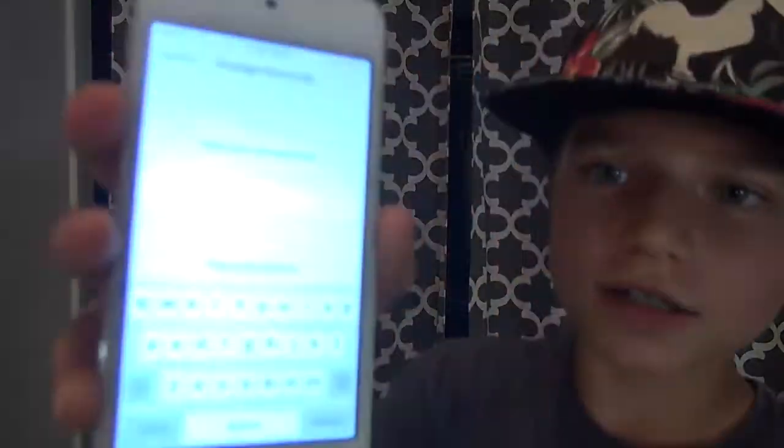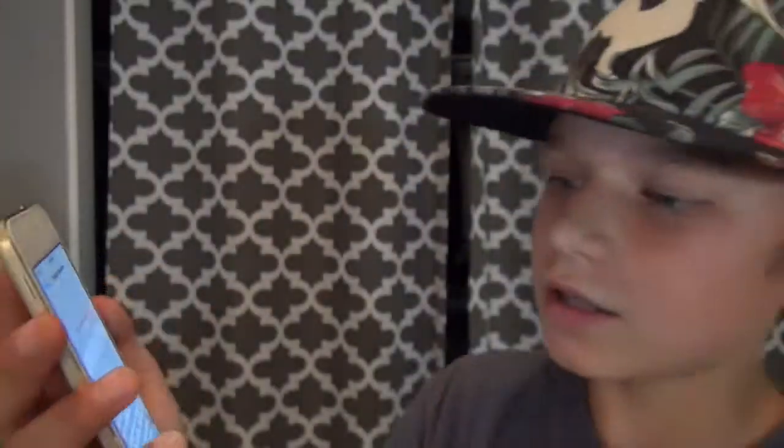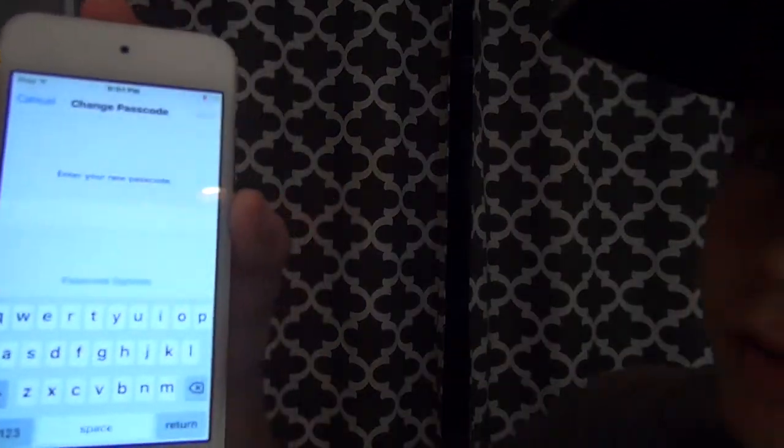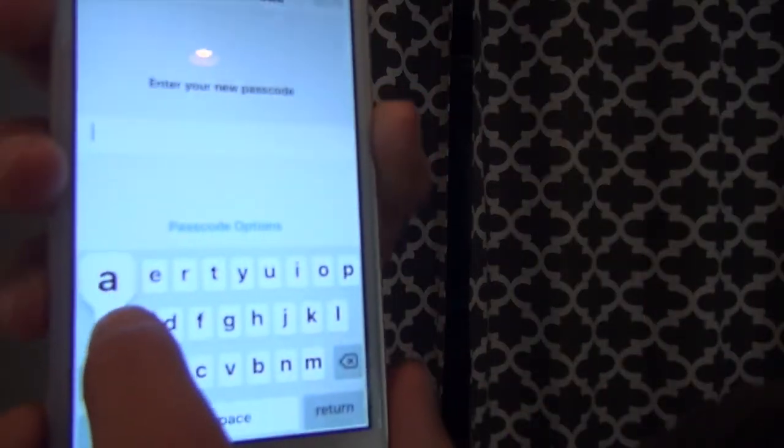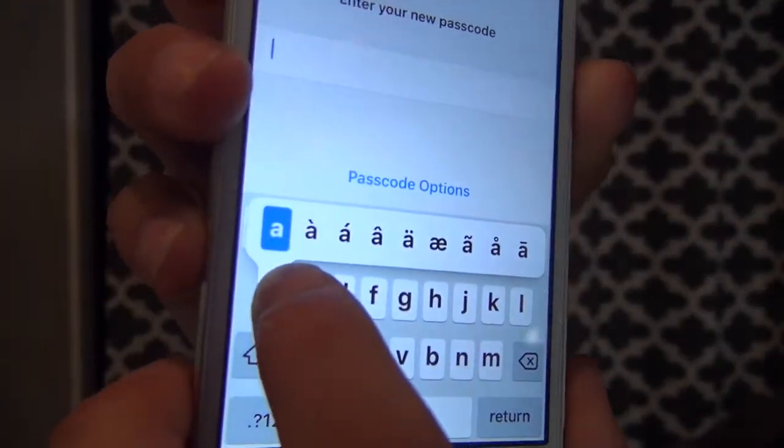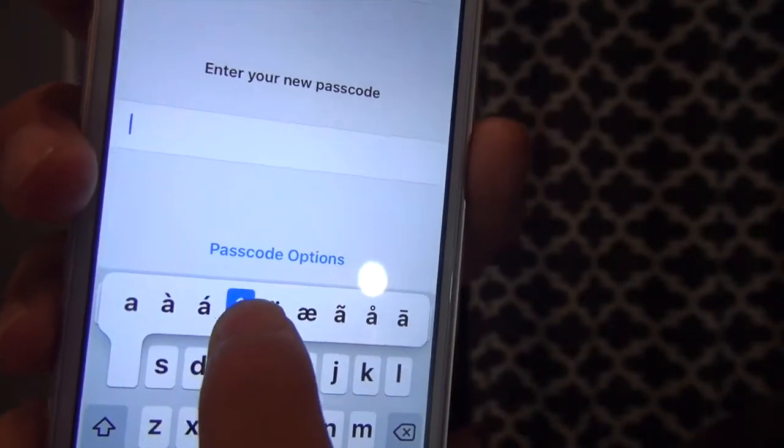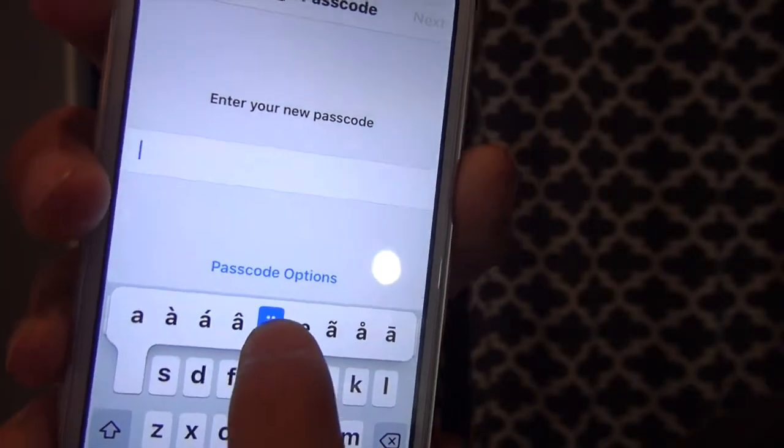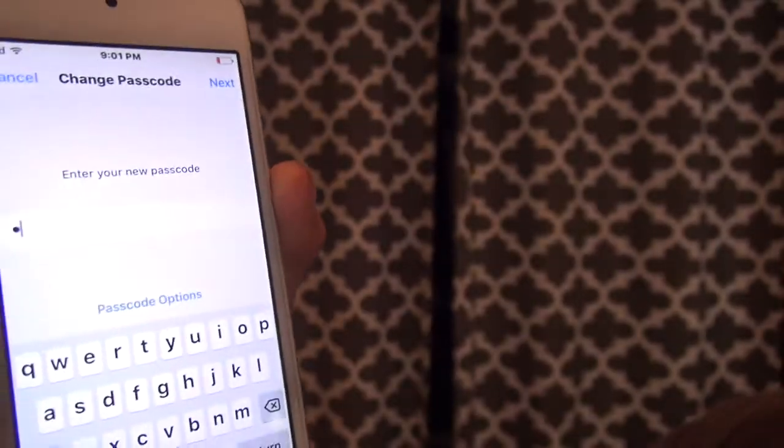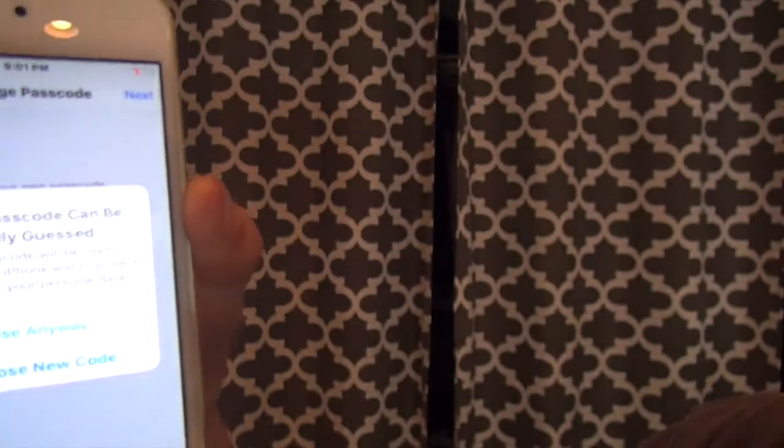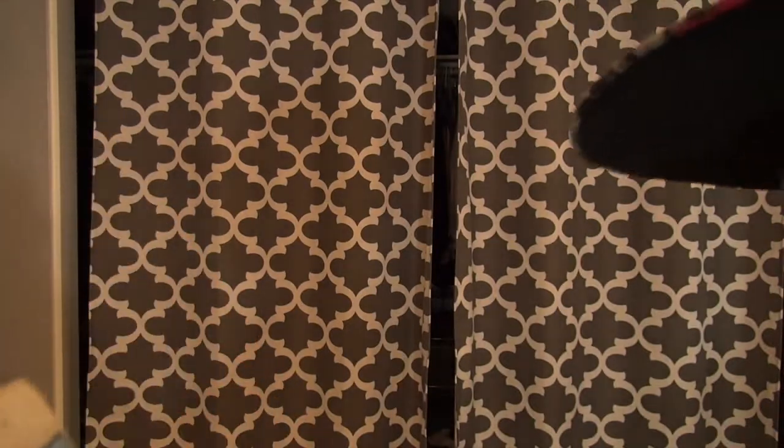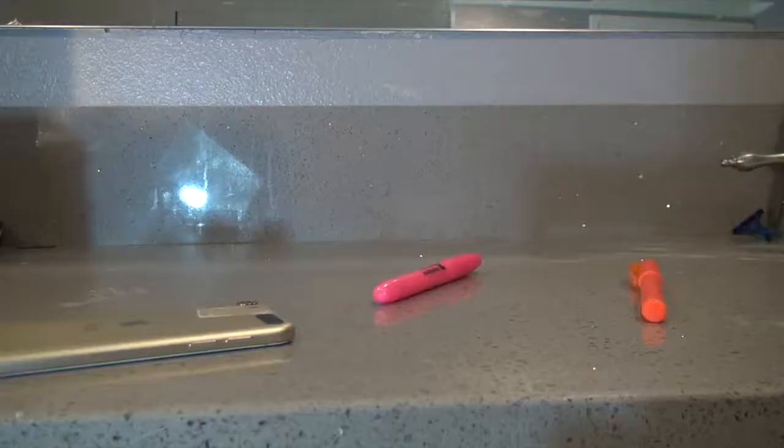Go on passcode options, then custom alphabetical passcode. It's gonna show all your letters. An accent letter is when you hold down one and it pops up, so you get to pick whatever you want. You pick it, press next, and it's gonna say choose new passcode or use anyway, so you want to put use anyway.